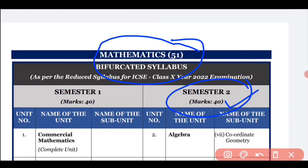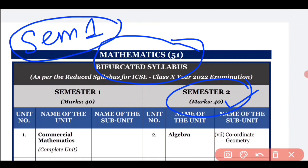Many of you are worried about your board results for Semester 1. In Semester 1, you will get marks for each and every subject individually — you will not get any percentage. You will get marks out of 40 for each subject.